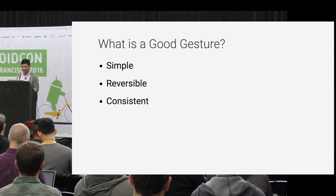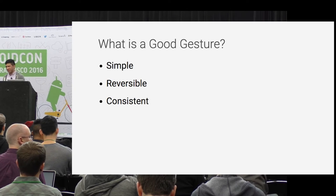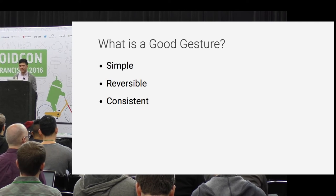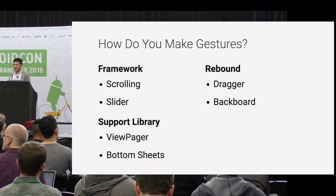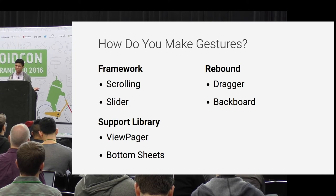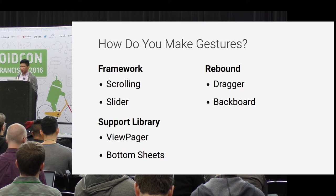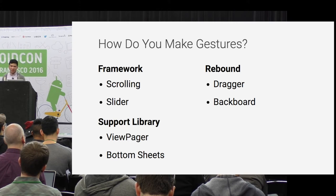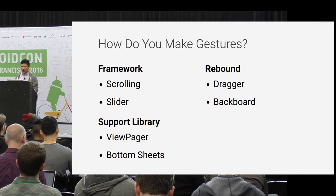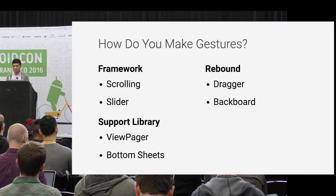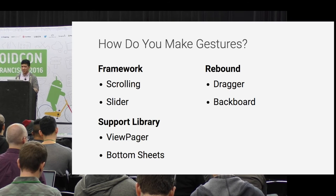There are examples I missed, like swiping away your email in Inbox or Gmail. I think you all want to know how to make these. A lot of these are already in the framework - scrolling, scroll view, recycler view, list view, sliders. The support library has a lot of additional material design components like the view pager, and bottom sheets which they just added recently.